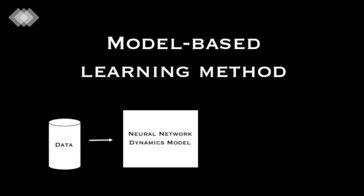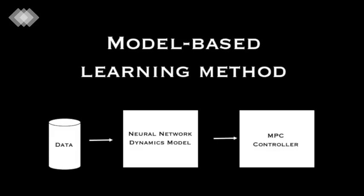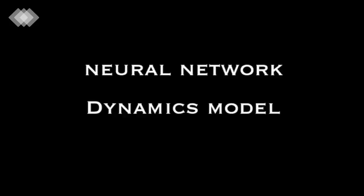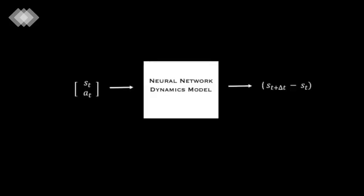Our model-based learning method involves using data to learn a dynamics function, and then using that dynamics function as part of a controller in order to follow desired trajectories. We implement the dynamics model as a multilayer neural network consisting of two hidden layers, each of dimension 500. This function takes as input a state and an action, and outputs the state difference that occurs over the time-step duration, delta t.